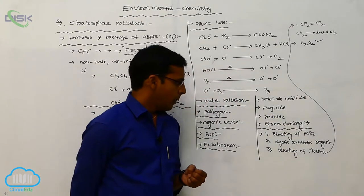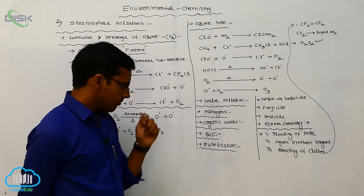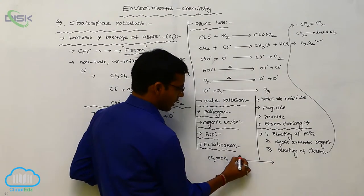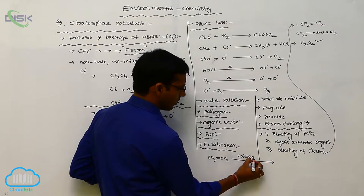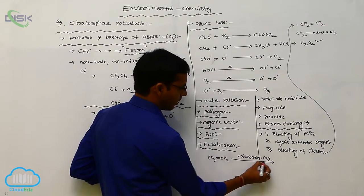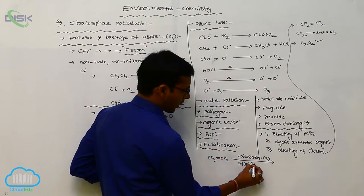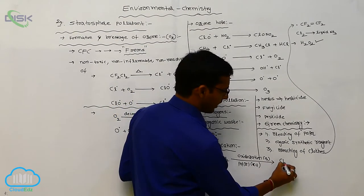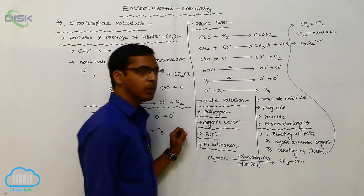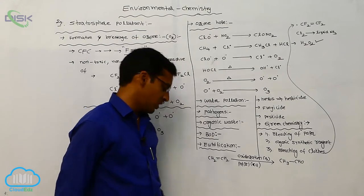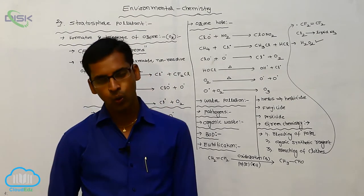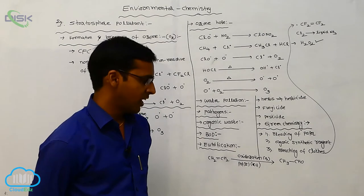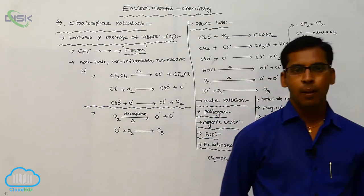And next one is organic synthetic reagent. It means ethylene molecule undergoes oxidation in presence of palladium 2+ or copper 2+ complexes. In presence of these catalysts, it is directly converted to aldehyde. This is a direct process. The catalyst oxidation state is plus 2. It gives acetaldehyde. This is your direct preparation method by using green chemistry.